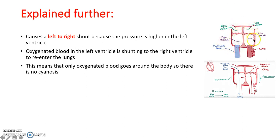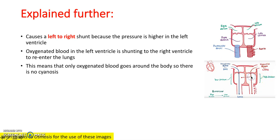In a normal heart, blood comes into the right atrium, through the right ventricle, into the pulmonary artery, into the lungs, and into the left atrium, left ventricle, and into the aorta. However, when there's a ventricular septal defect, blood re-entering the heart into the right atrium and going into the right ventricle can move back into the left ventricle and go to the lungs again.